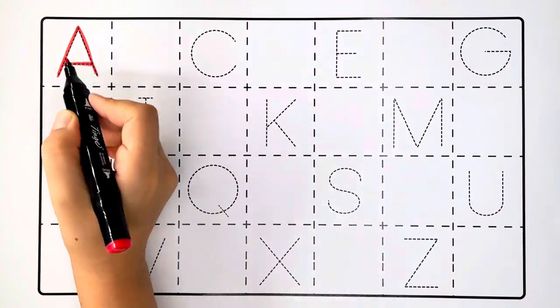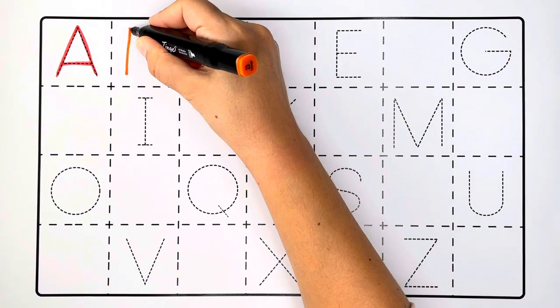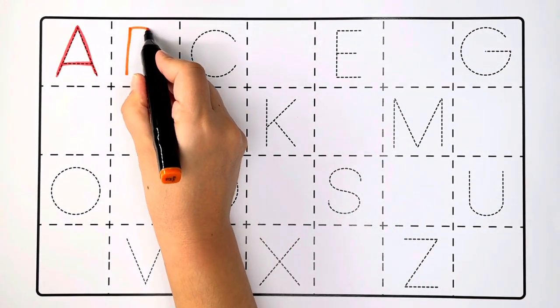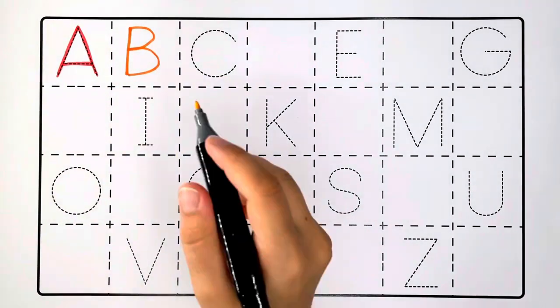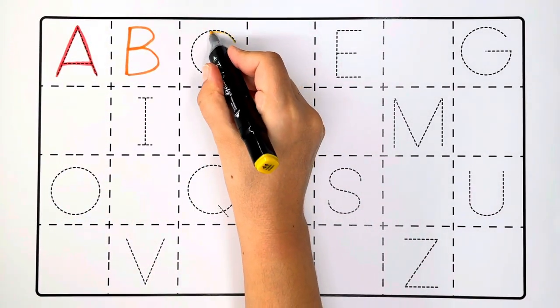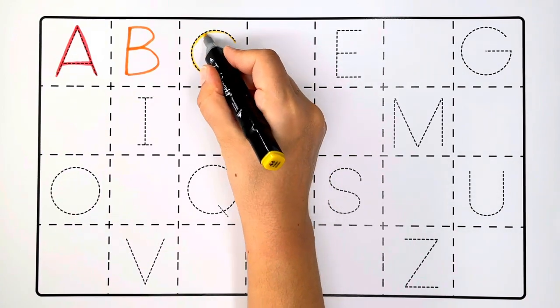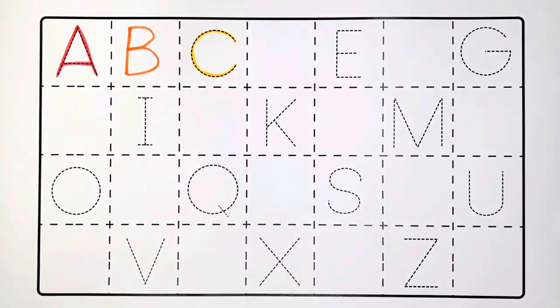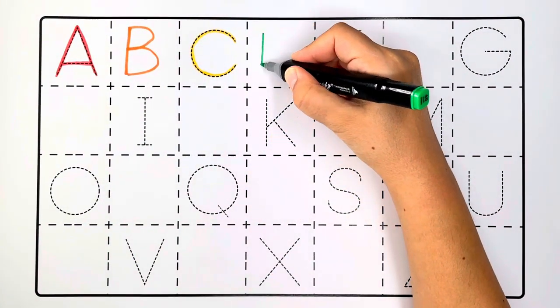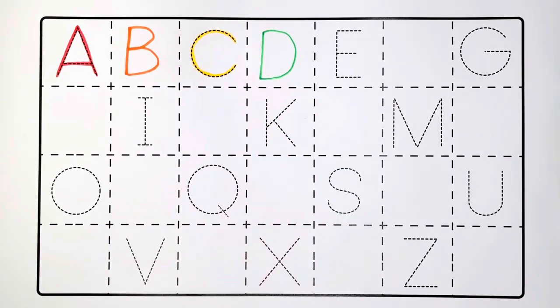A, A is for apple. B, B is for ball. C, C is for car. D, D is for dog.